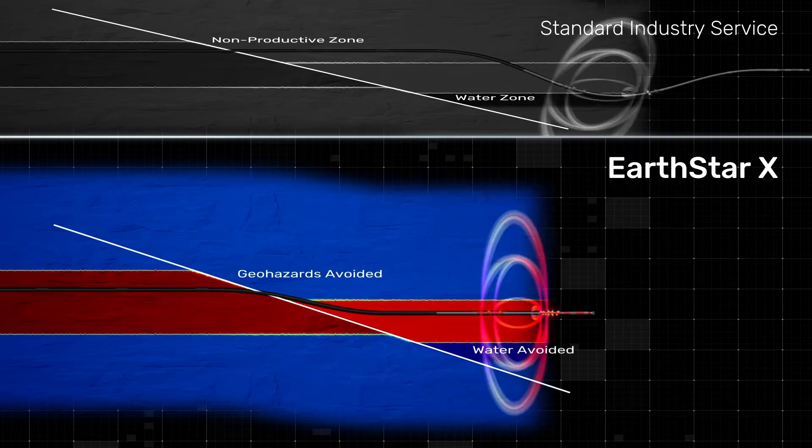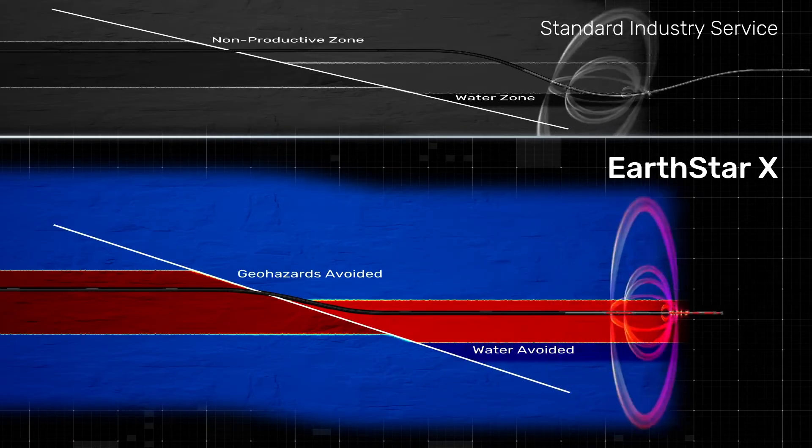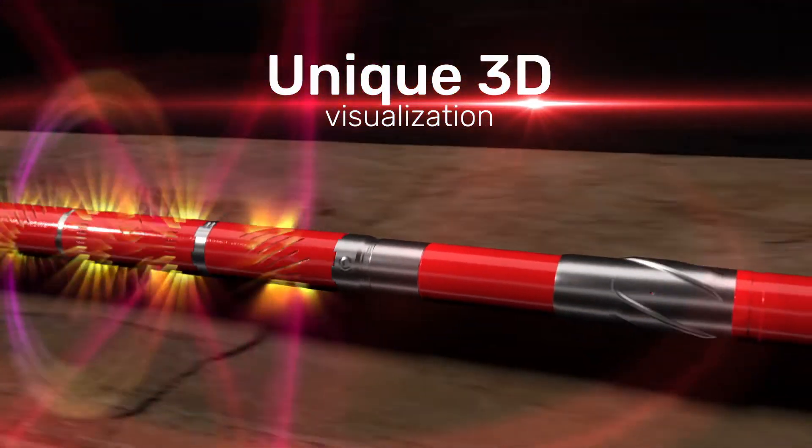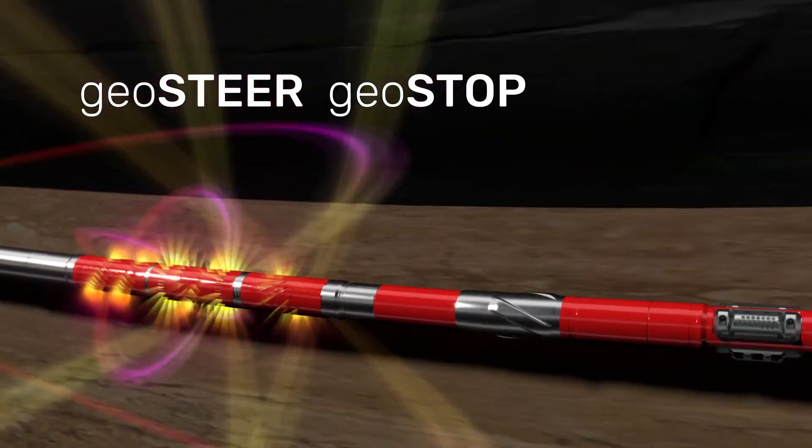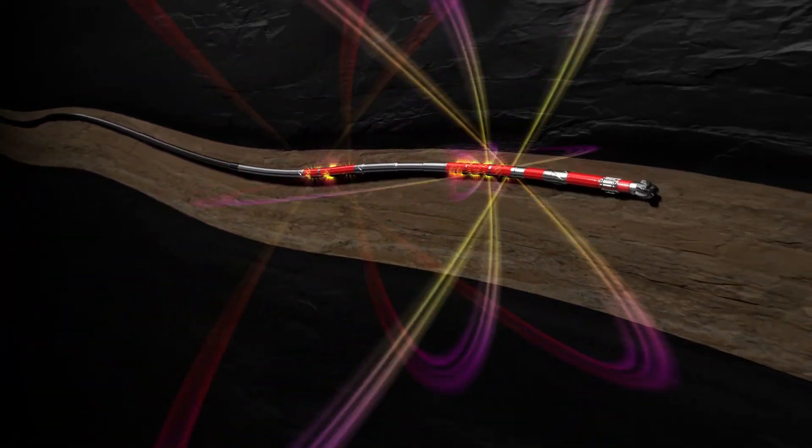Using shallow azimuthal measurements for reservoir characterization, and ultra-deep azimuthal resistivity measurements for early boundary detection, with unique 3D visualization to geosteer, geostop, and geomap, so the operator keeps the drill bit in the pay zone.